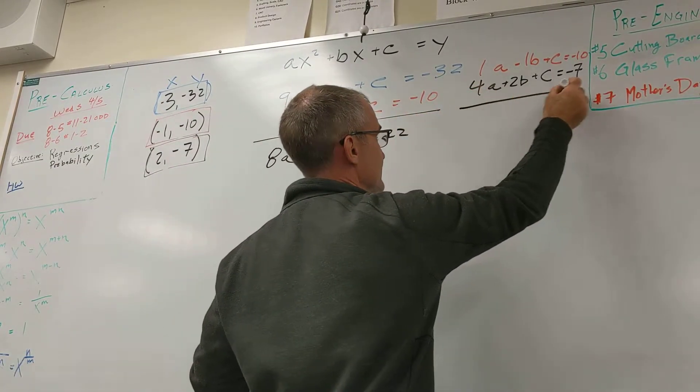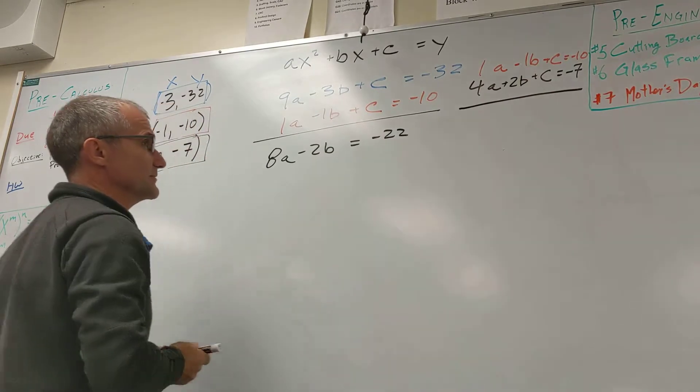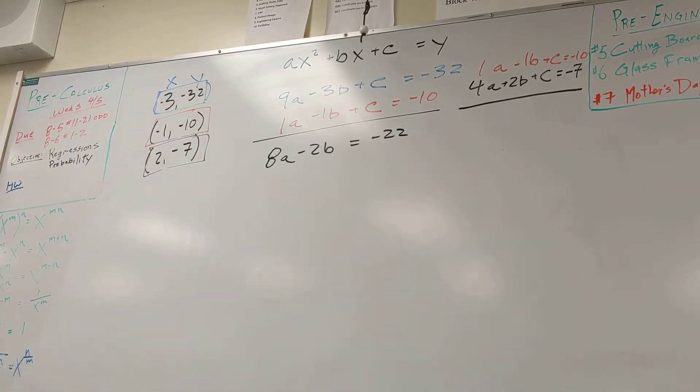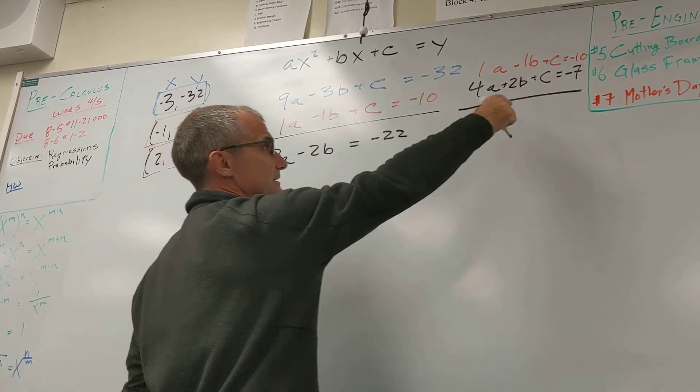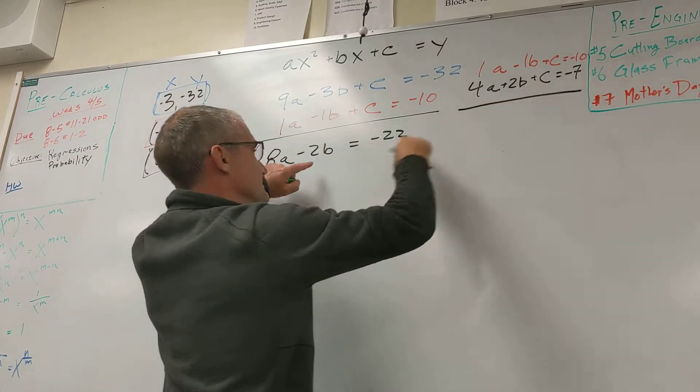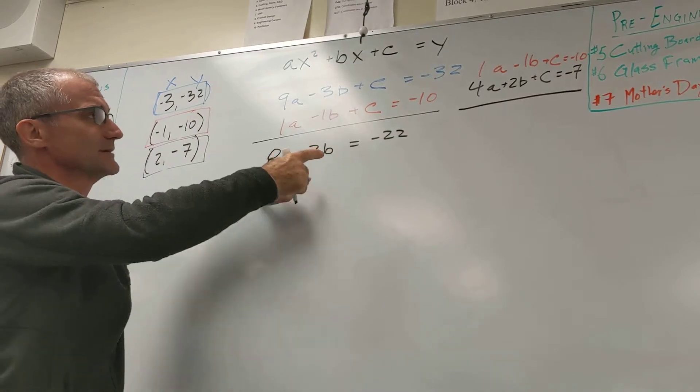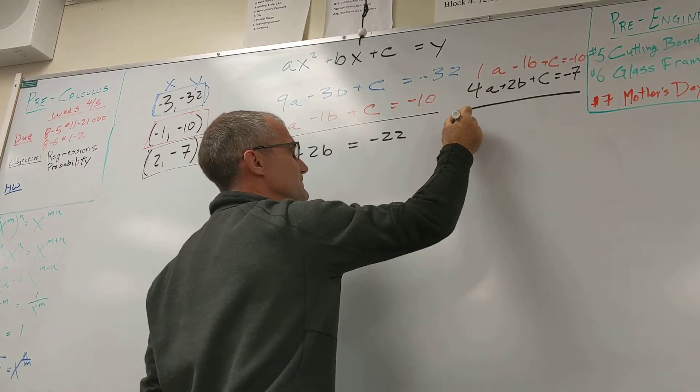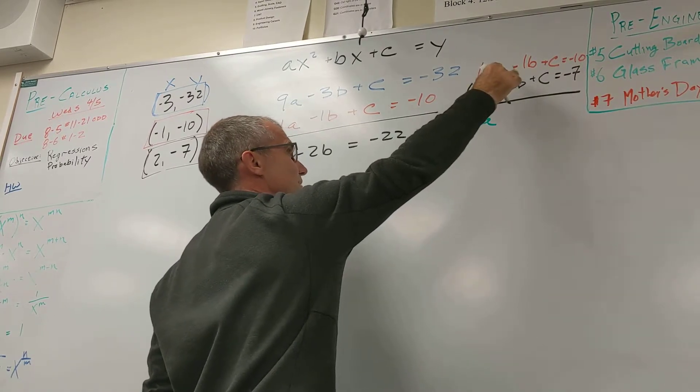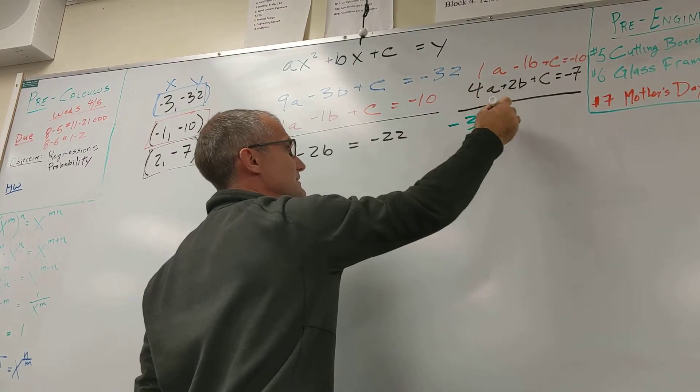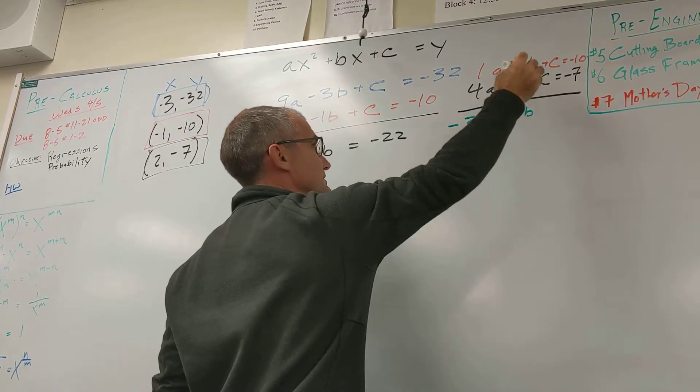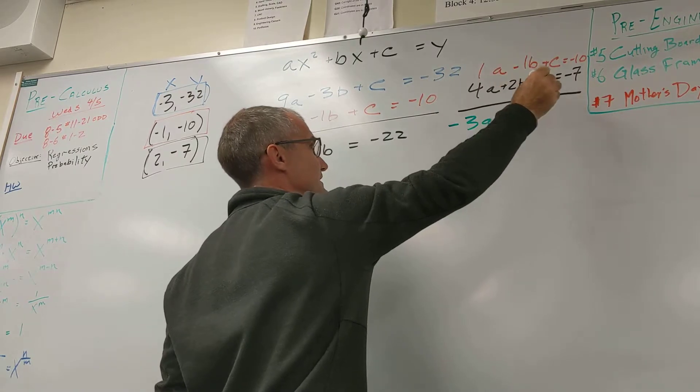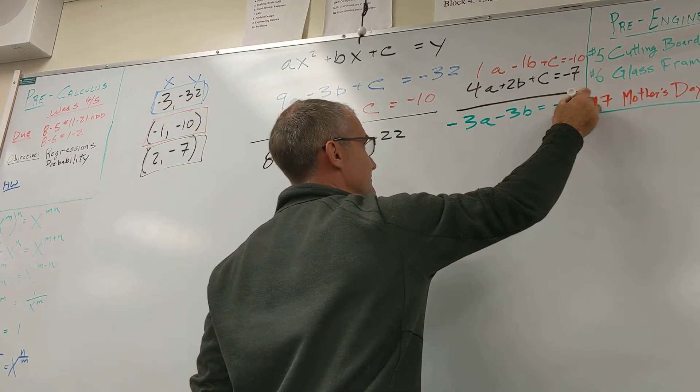And then I'm going to do the same thing here. I'm going to combine my second and third equations. And that's going to cancel this c out. I do have to get rid of the same variable of both of them. So then I'm going to do red minus black, 1a minus 4a, negative 3a, negative 1b minus 2b, negative 3b. C minus c will cancel. Negative 10 minus negative 7 is negative 3.